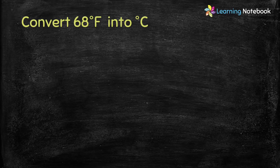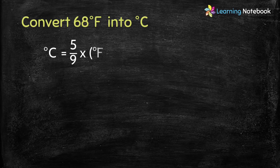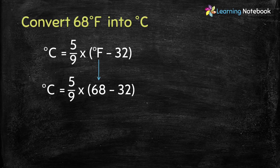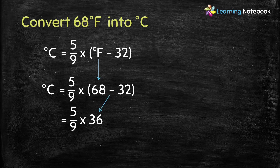The question is: convert 68 degree Fahrenheit into Celsius. As we just learned, Celsius equals 5 by 9 into Fahrenheit minus 32. So let's put the value of temperature in Fahrenheit into this formula, and we get 5 by 9 into 68 minus 32. 68 minus 32 equals 36, so we get 5 by 9 into 36.